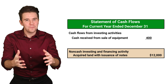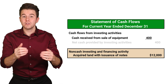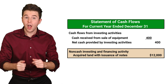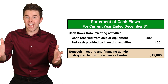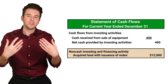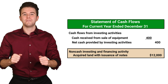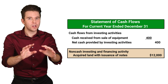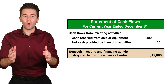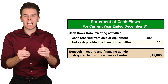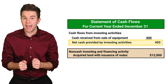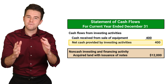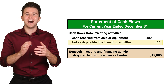To wrap it up, the cash flows from investing activity section of our statement of cash flows will look something like the following. In total, we report net cash provided by investing activities of $400.